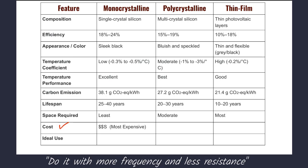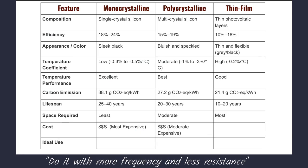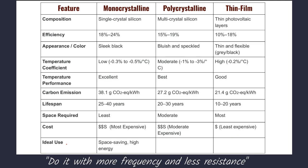When it comes to cost, Mono-crystalline panels are the most expensive. Poly-crystalline solar panels are somewhat expensive, but less than Mono-crystalline. Thin-Film panels are the least expensive.